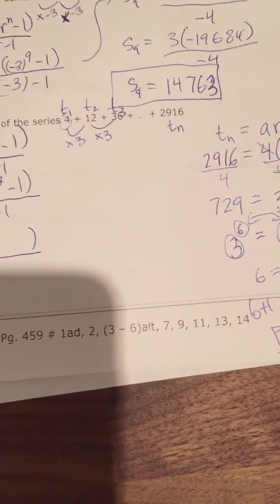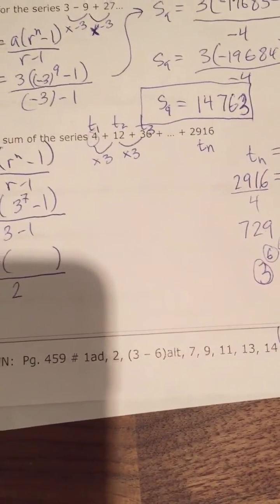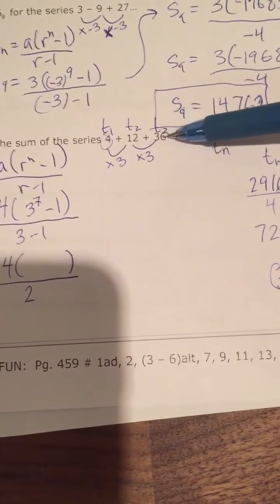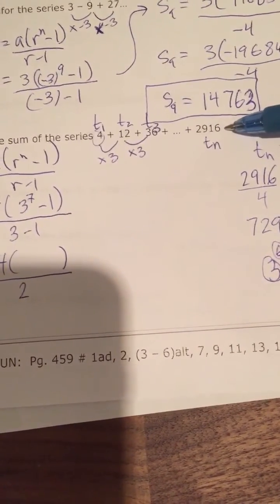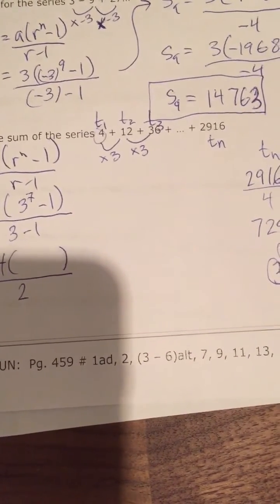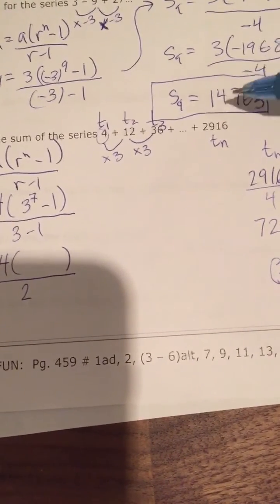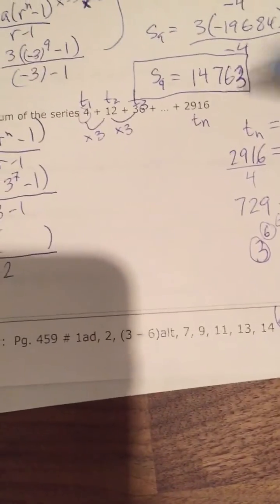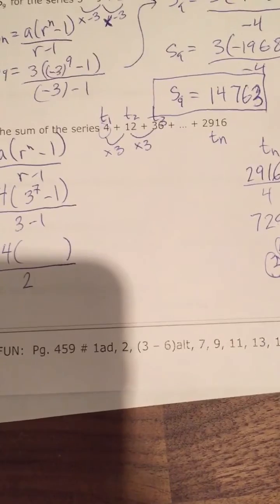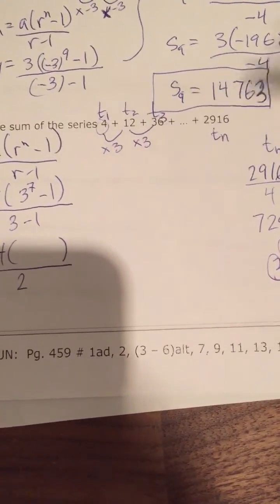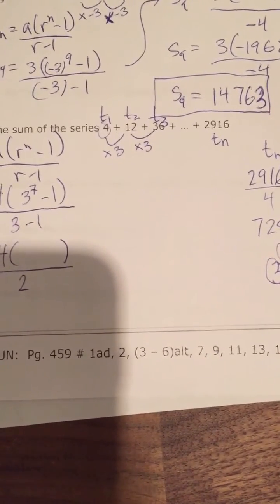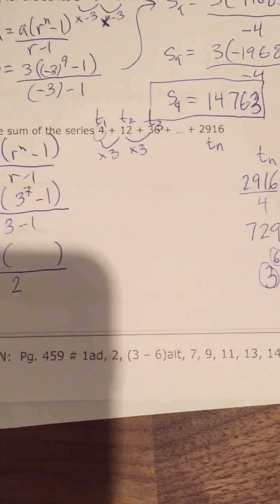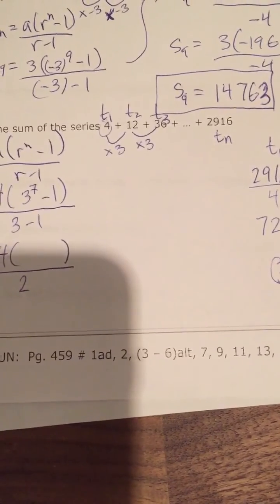Just like in arithmetic series, this could be a word problem. For example, a movie theatre where the first row has 4 seats, the second has 12, the third has 36, and the final row has 2,916 seats — asking for the total seats across all rows. Make sure you set up a series or sequence with the given values. If they ask for seats in just the 7th row, you find term 7. If they want all 7 rows together, you find the sum of the first 7 terms.